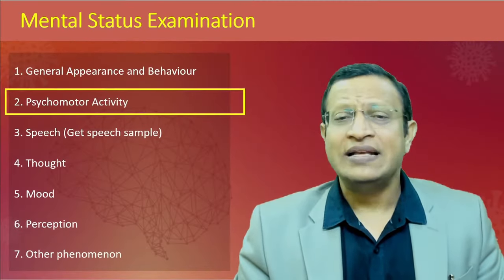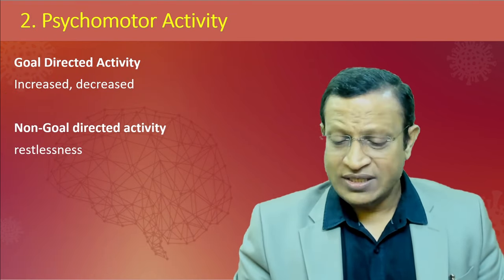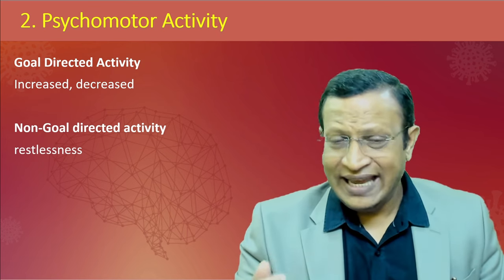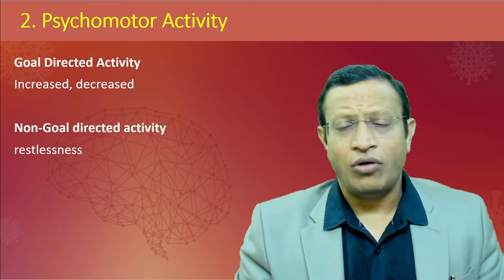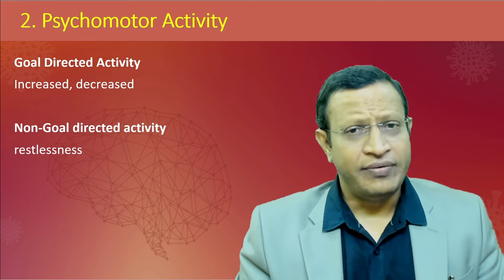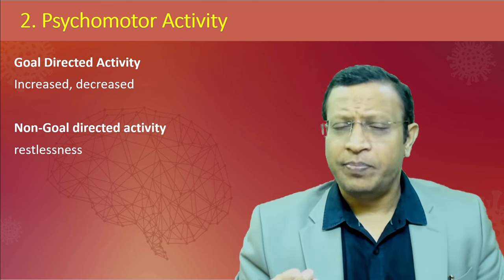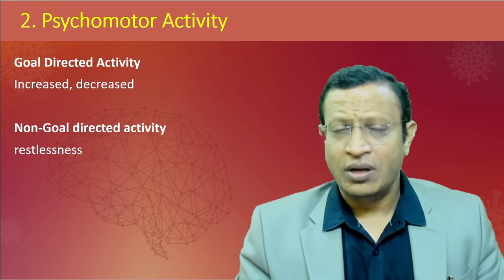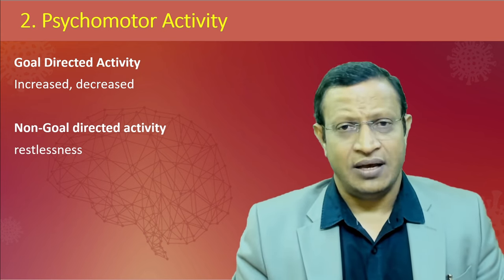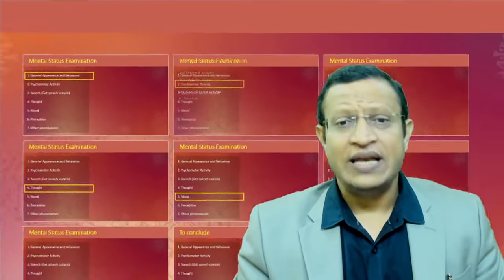Psychomotor activity is basically goal-directed activity. Whether there was any goal-directed activity increased or decreased - for example, increased goal-directed activity is commonly seen in mania. If goal-directed activity is very slow and retarded, we call it psychomotor retardation. In schizophrenia, patients may be restless, moving and pacing up and down, unable to sit in one place - especially if they have side effects like akathisia. In that situation, you write that restlessness was present or the patient was pacing up and down.